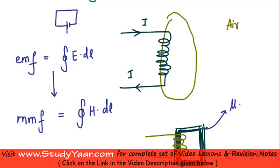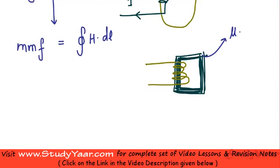So DL is along this closed path. DL is along this closed path, or if you talk about this core it's along this closed path.